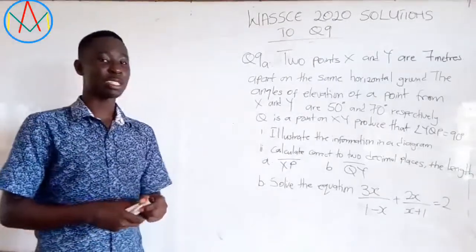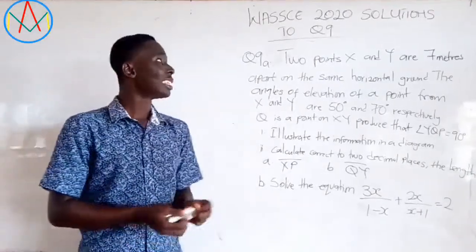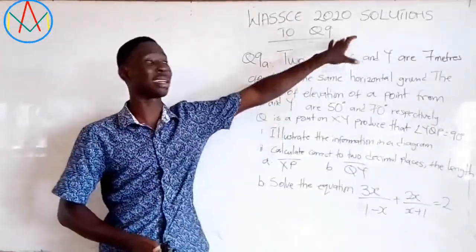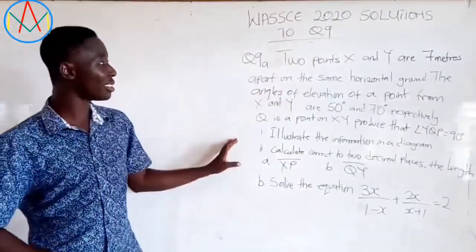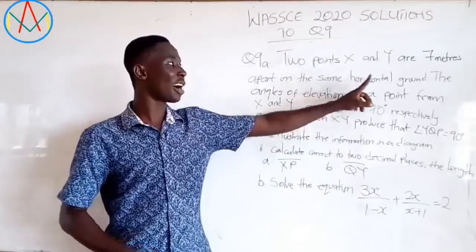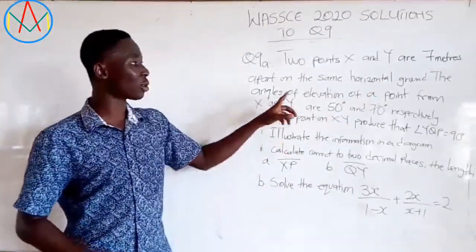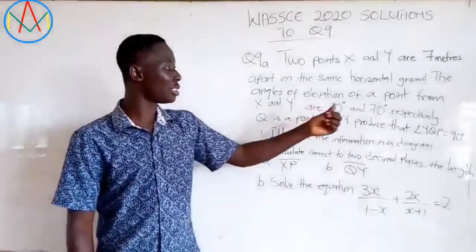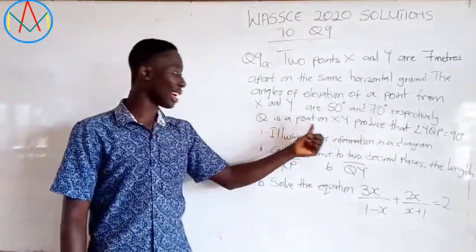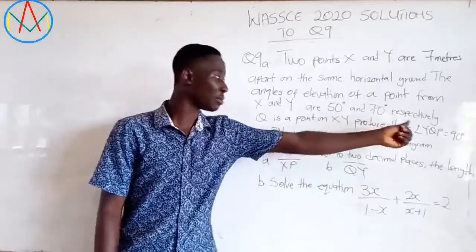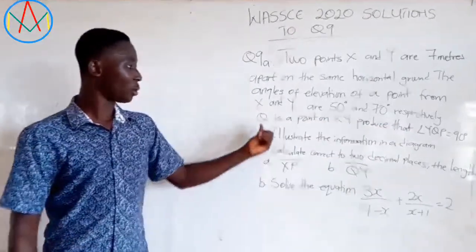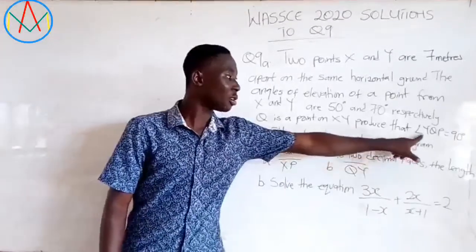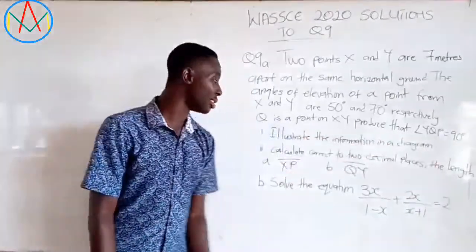Hello guys and welcome to my channel once again. In this video we are going to solve 1C20 solutions to question number 9. The question is: 2 points X and Y are 7 meters apart on the same horizontal ground. The angles of elevation of a point from X and Y are 50 and 70 degrees respectively. K is a point on XY produced such that angle YKP equals 90 degrees.